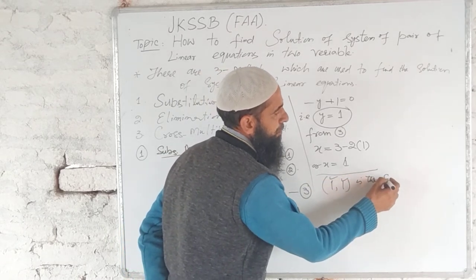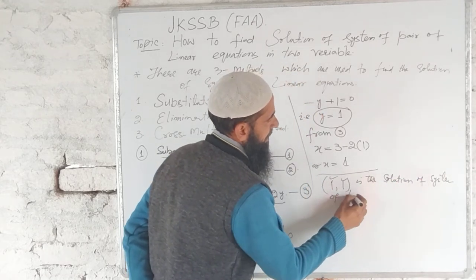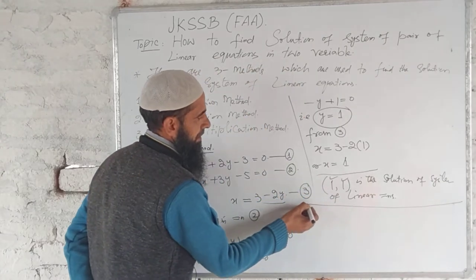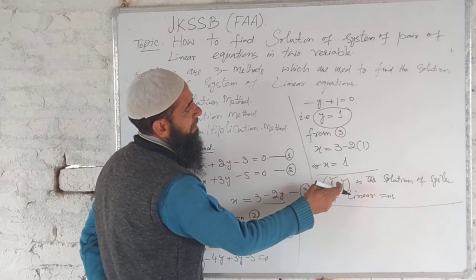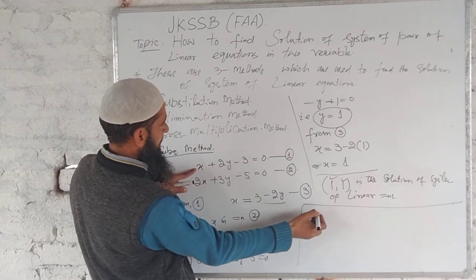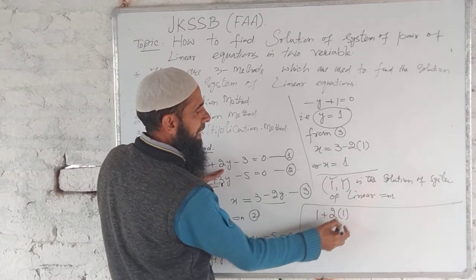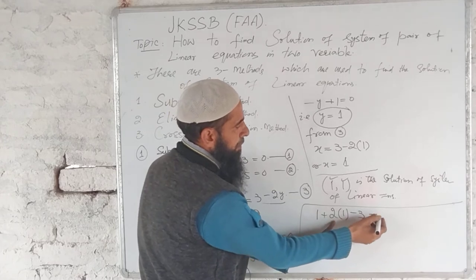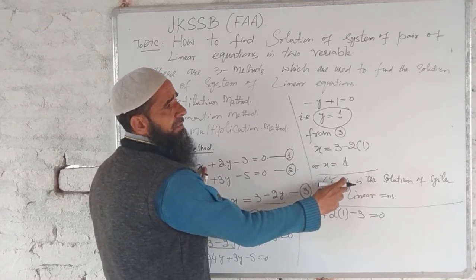This is the solution of system of linear equations. You can check this whether this is the solution. You can check easily, substitute value of 1, 1 in the given system. Substitute value of X in equation first, 1 plus 2 into Y value is 1 minus 3. Clearly it becomes 1 plus 2 minus 3, that is 0, which is RHS. Therefore, it is satisfied by the values of X and Y.